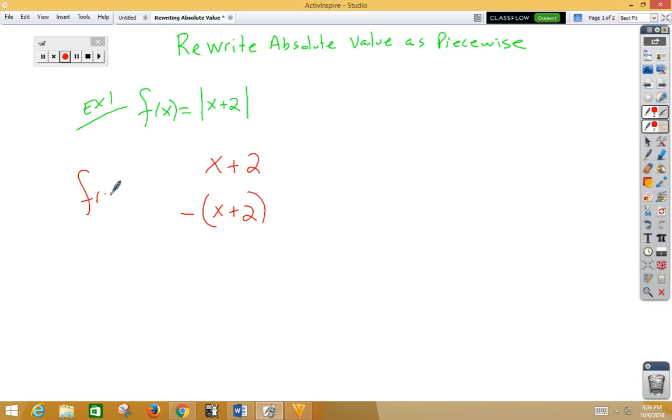We're going to rewrite this function in two pieces, once positively and once negatively. We need to know the breaking point on an absolute value function. For x plus 2, if I set that equal to 0, I get x equals negative 2. So negative 2 is my breaking point.